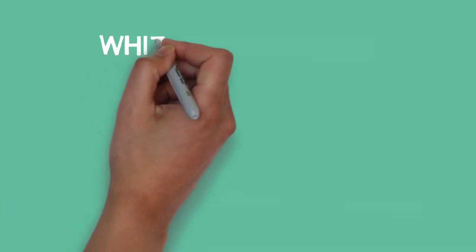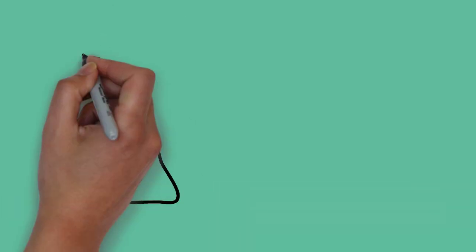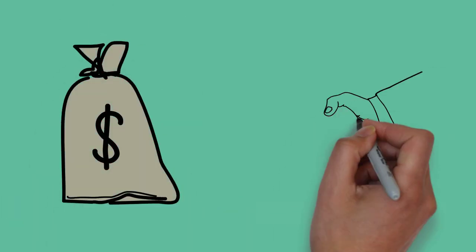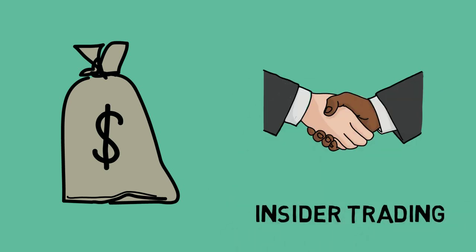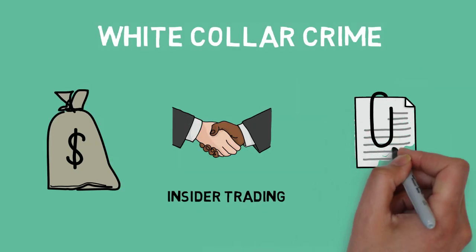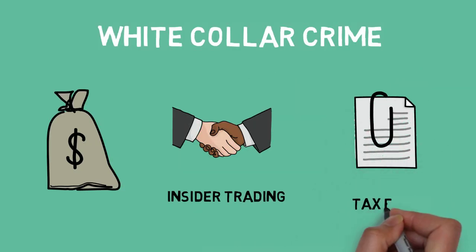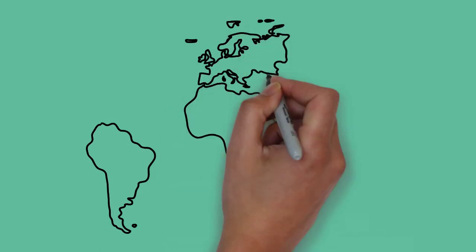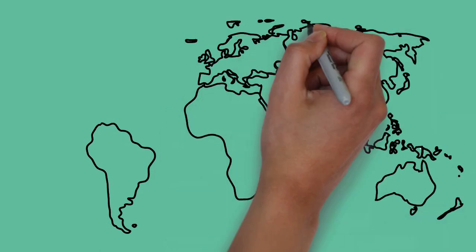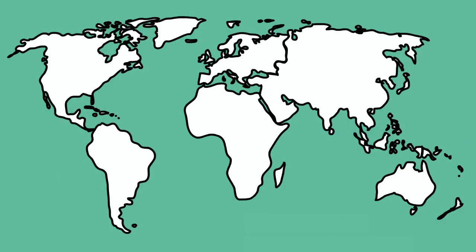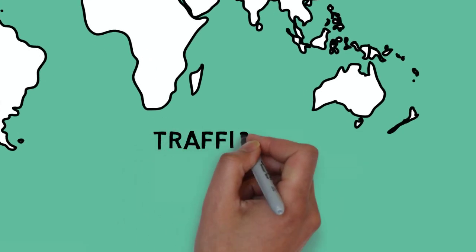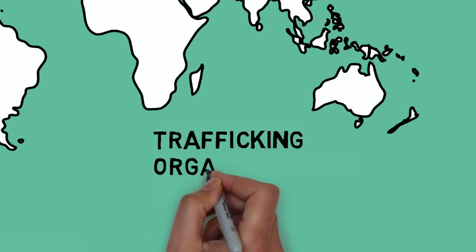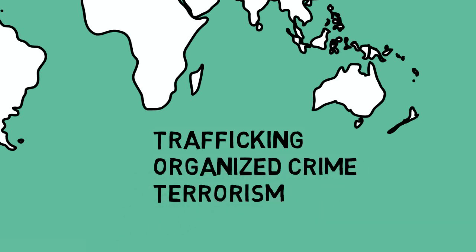How about white-collar crimes — money laundering, insider trading, tax fraud — or cross-national or international crimes, human trafficking, organized crimes, or international terrorism?